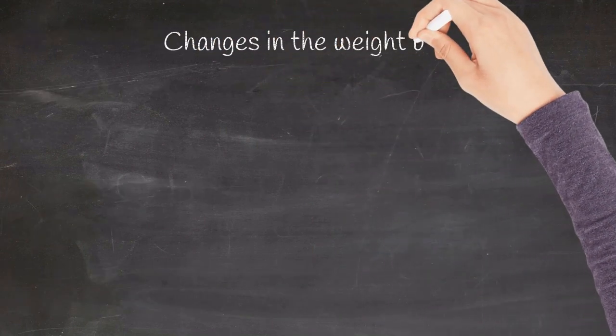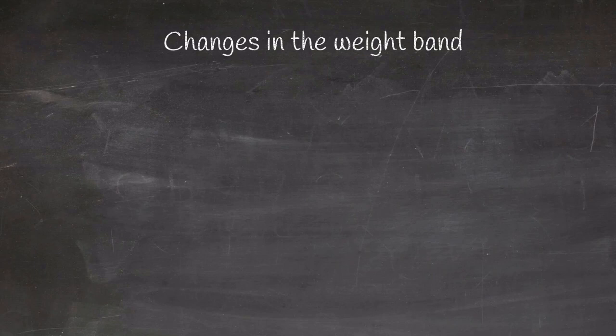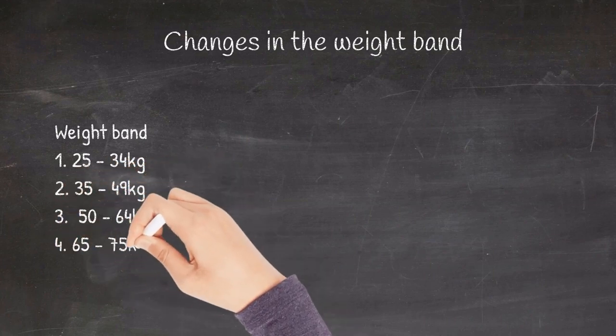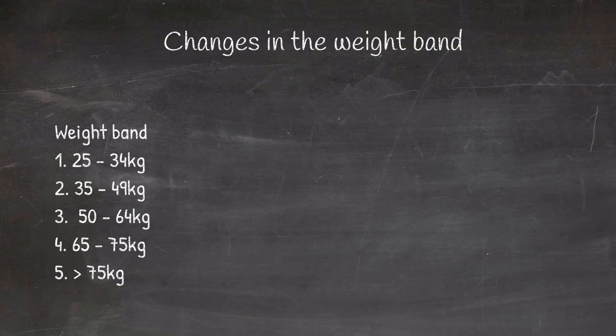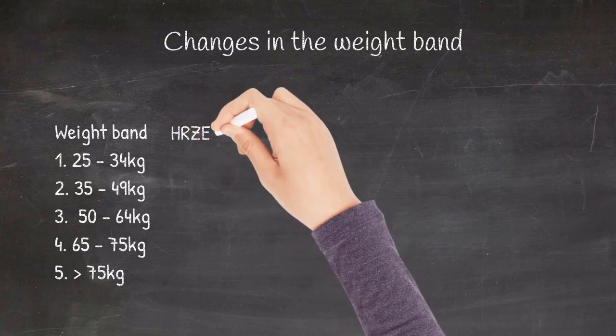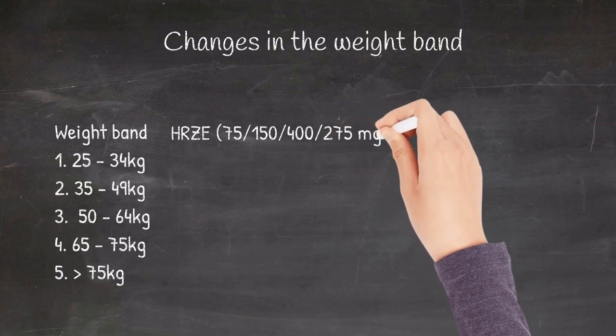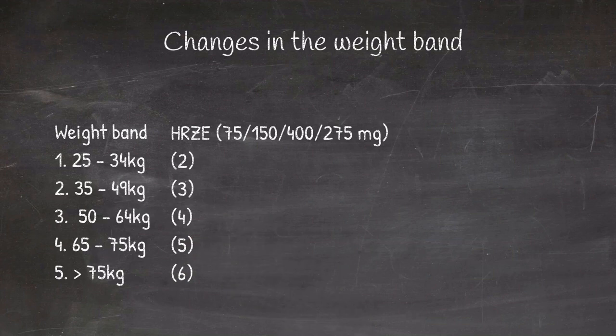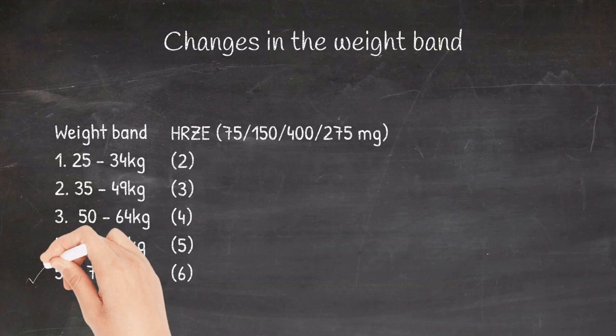Now let us look into the weight bands. There are five weight bands: 25 to 34 kilogram, 35 to 49 kilogram, 50 to 64 kilogram, 65 to 75 kilogram and more than 75 kilogram. Each FDC has 75 milligram of INH, 150 milligram of rifampicin, 400 milligram of pyrazinamide and 275 milligram of ethambutol. The FDC given in the continuation phase doesn't have pyrazinamide. The dosing of other drugs remain the same. The first weight band, the patients with 25 to 34 kilogram received two tablets, then three tablets, four tablets, five tablets and six tablets based on their weight bands.